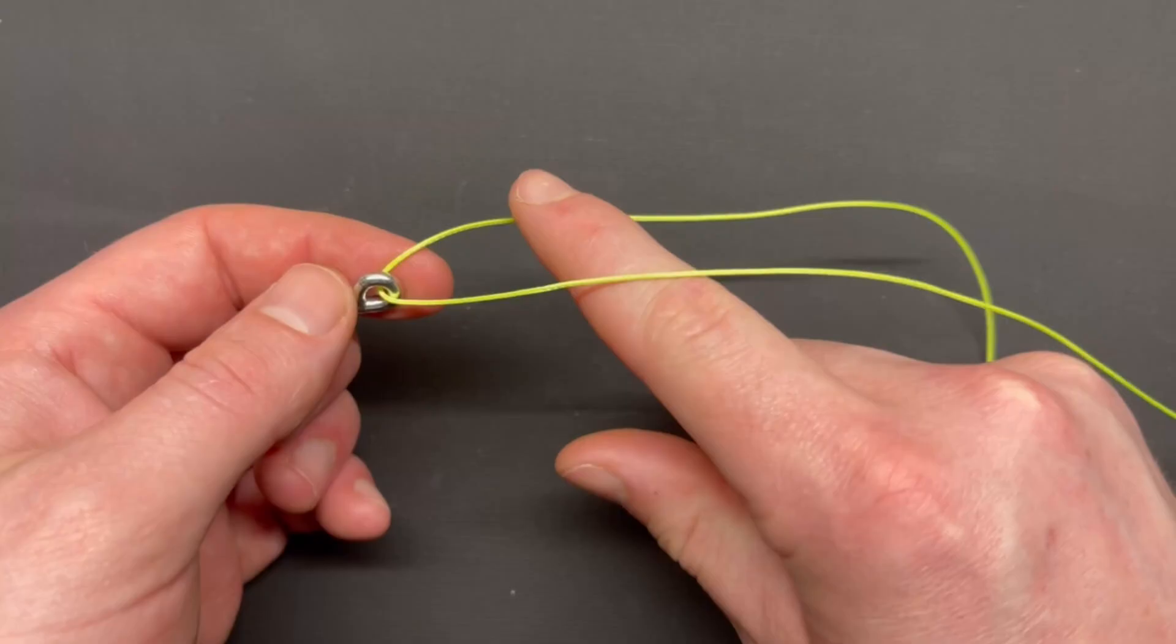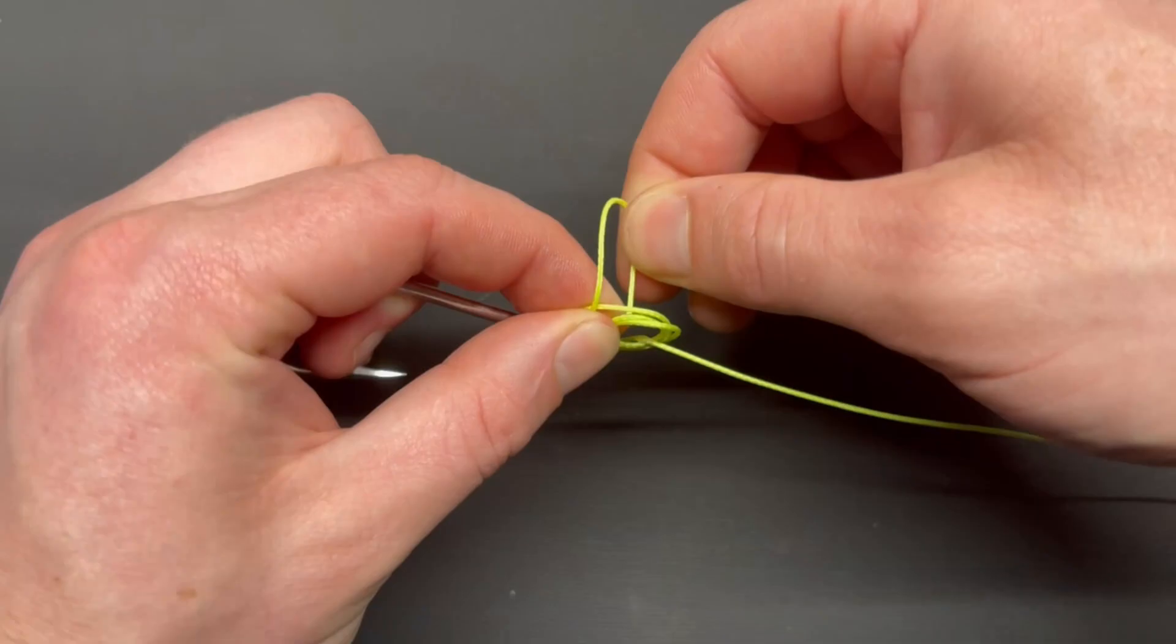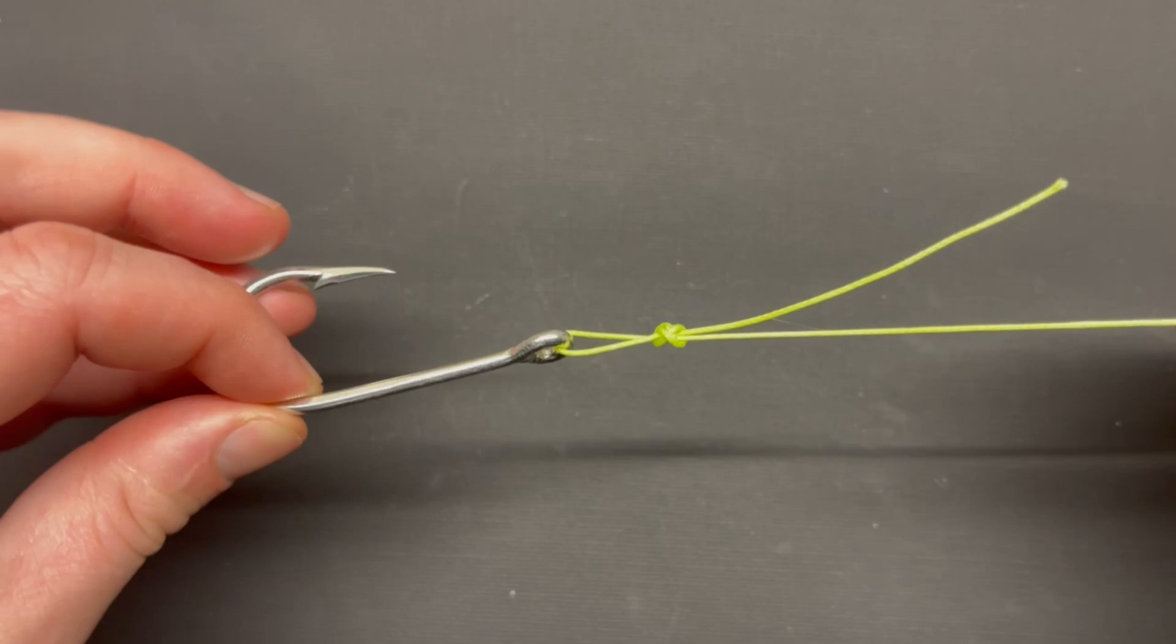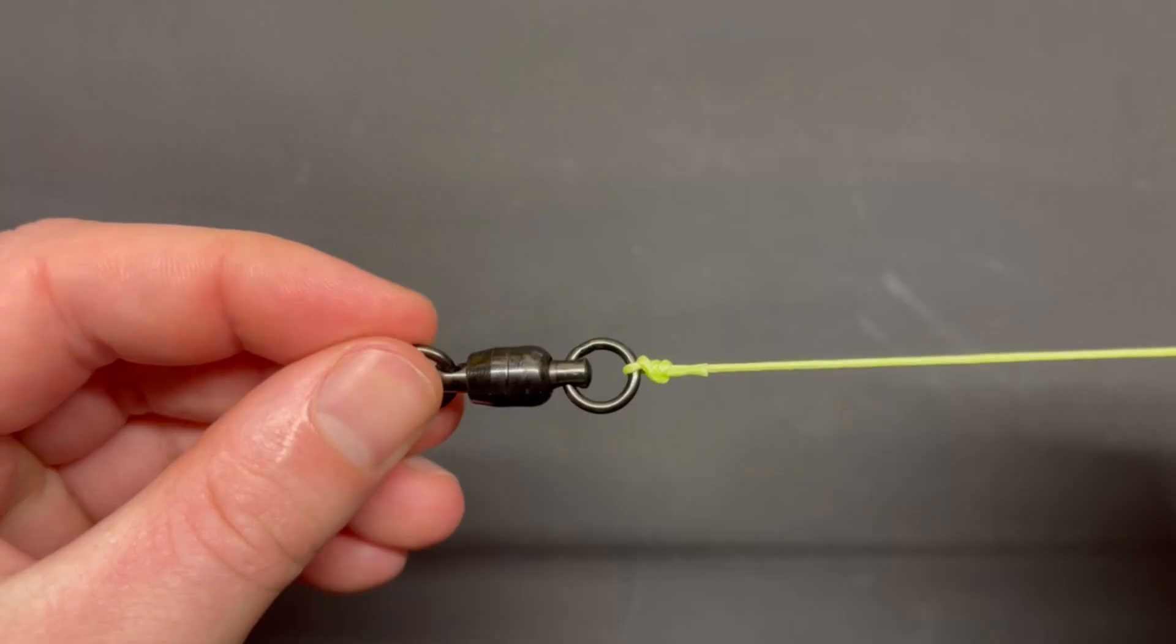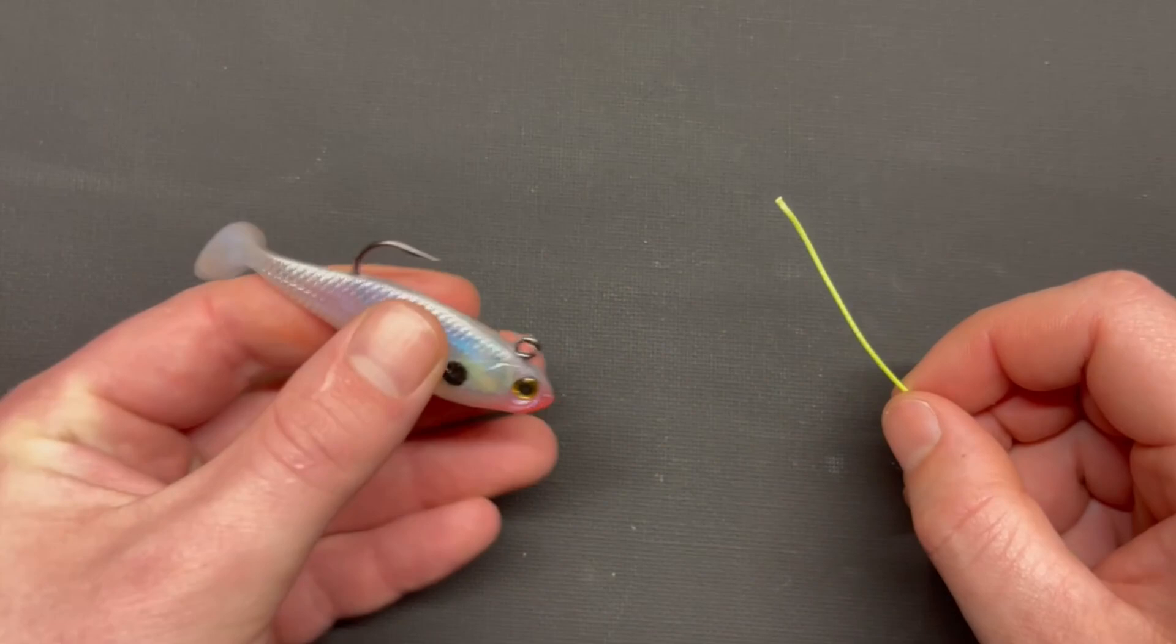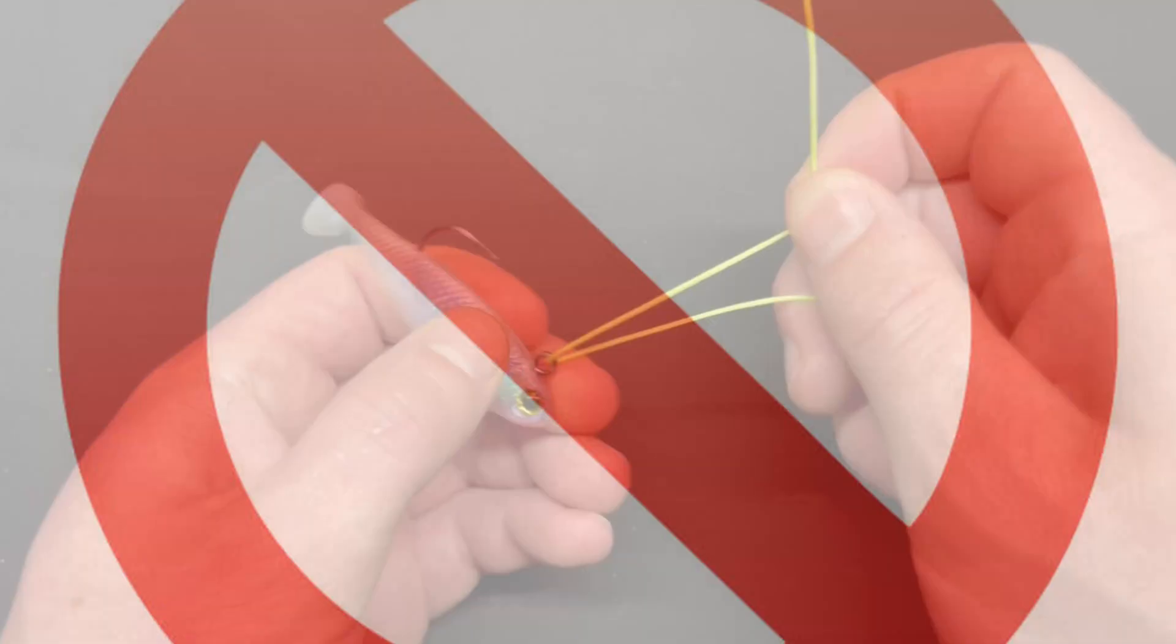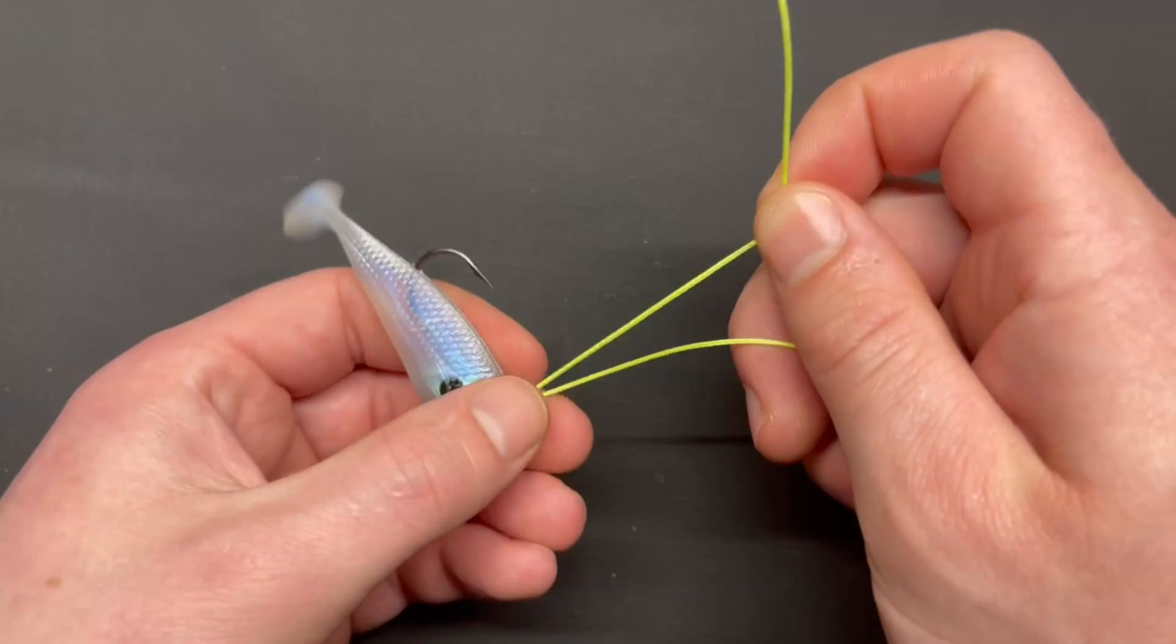Today let's learn the Centauri knot, one of the best knots for tying heavy line to your tackle. This fast and simple knot can be used on hooks, swivels, weights, or anything you need to tie heavy line to. That being said, I'll also go over a specific situation where you should never use this knot, so make sure to watch the whole video all the way to the end so you don't make that mistake.